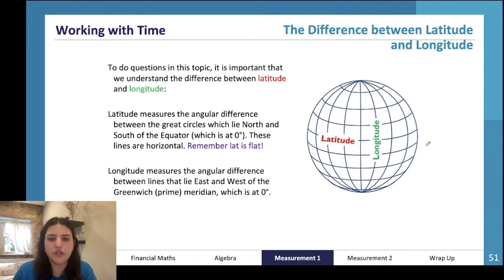Latitude measures the angular difference between these great circles up here and here, and it essentially is the lines that run like the belt around the world.